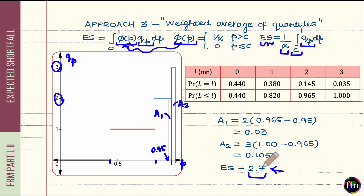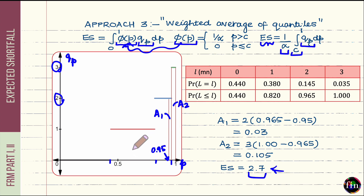So essentially, in this video we have taken three different approaches to calculate the expected shortfall for a simple problem where the loss is a discrete random variable taking one of four possible values. We have convinced ourselves that all three approaches eventually give us the same result of 2.7 million.